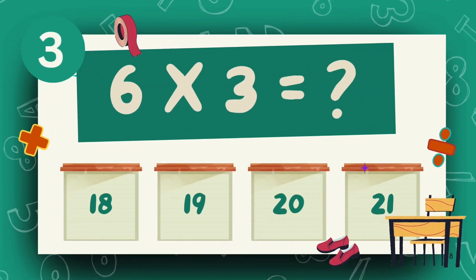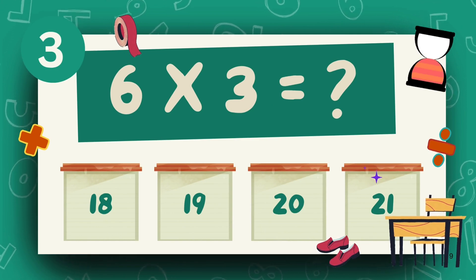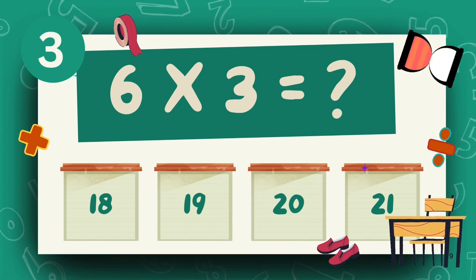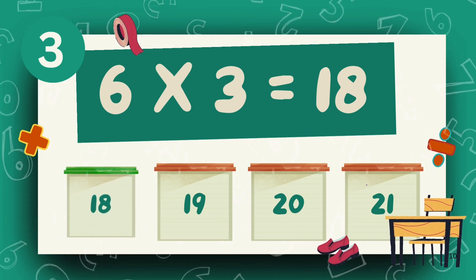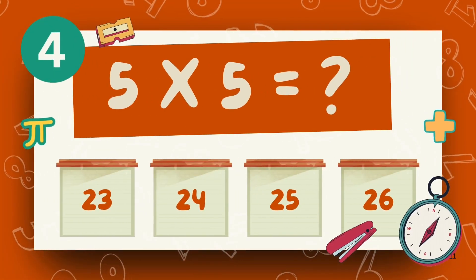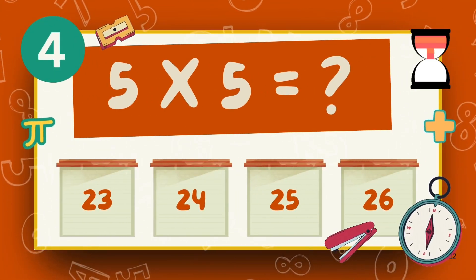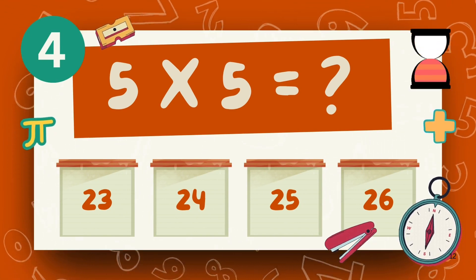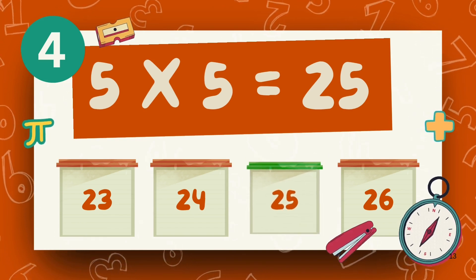What is 6 multiply 3? The answer is 18. What is 5 multiply 5? The answer is 25.